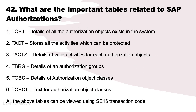What are the important tables related to SAP authorizations? TOBJ: provides details of all authorization objects in the system. TACT: stores all activities which can be protected. TACTZ: gives details of valid activities for each authorization object. TBRG: contains details of authorization groups. TOBC: provides details of authorization object classes. TOBCT: text for authorization object classes. All the above tables can be viewed using the SE16 transaction code.